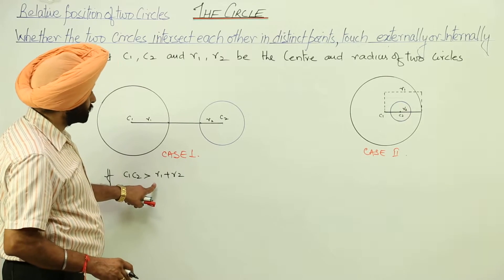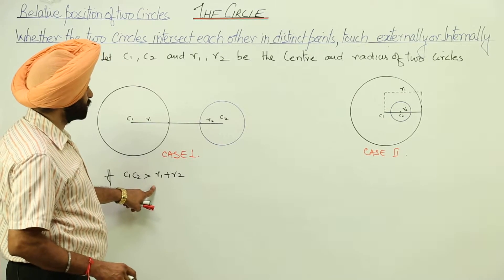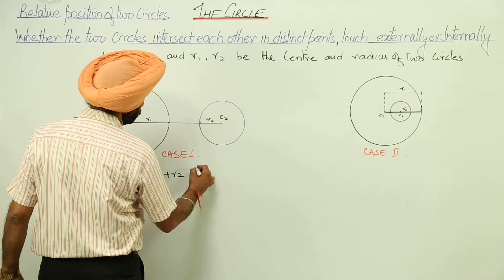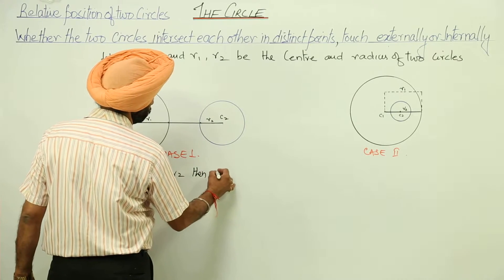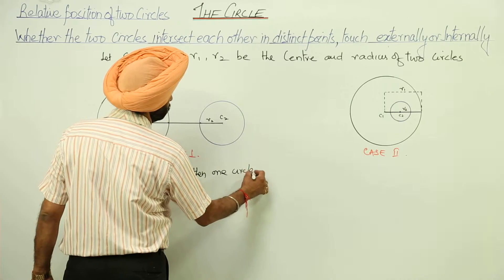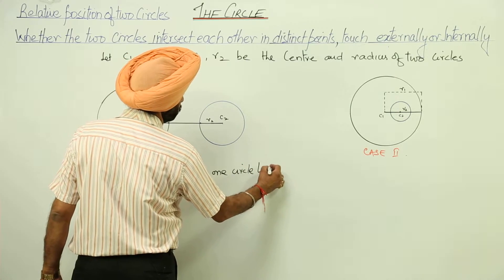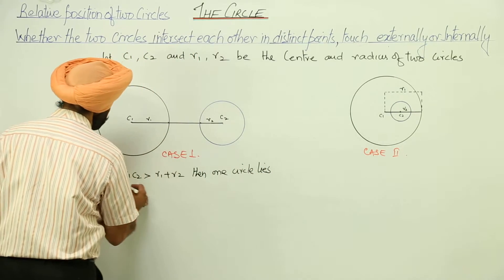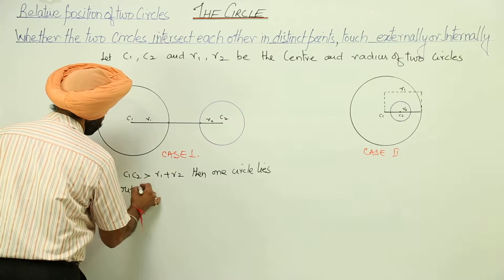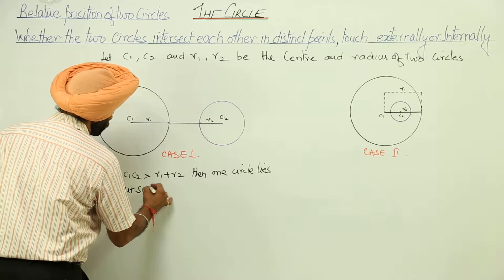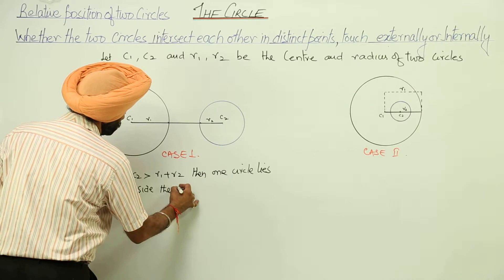If c1, c2 is greater than r1 plus r2, then one circle lies outside the other circle.